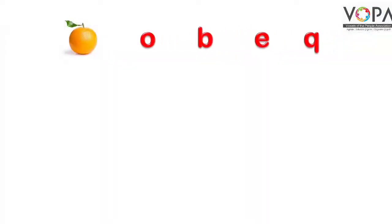पहली picture है Orange की — यानि संतरा। इसके आगे चार letters दिये गए हैं: O for Orange, B for Ball, E for Elephant, और Q for Queen। हमें पता है कि Orange की शुरूआत O से होती है, इसलिए हम लोग O को encircle करेंगे।